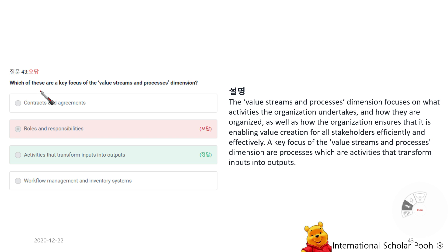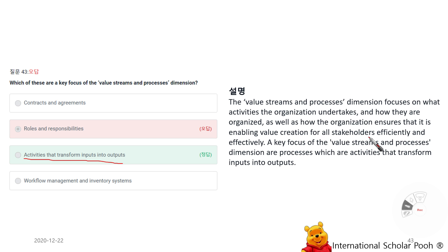Which of these are a key focus of the value streams and processes dimension? Activities that transform inputs into outputs. The value streams and processes dimension focuses on what activities the organization undertakes and how they are organized, as well as how it enables value creation for all stakeholders efficiently and effectively. A key focus is processes, which are activities that transform inputs into outputs.